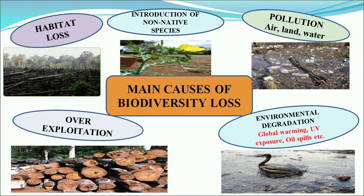The main causes of biodiversity loss include: introduction of non-native species — two outstanding examples are parthenium (carrot grass) and water hyacinth, which were brought to our country as ornamental plants or unintentionally along with imported grains. They have spread wildly, at the cost of our original native species. Next is pollution — air, land, and water pollution all affect biodiversity. Then there is environmental degradation: global warming, UV radiation, and oil spills are all very harmful to living species.